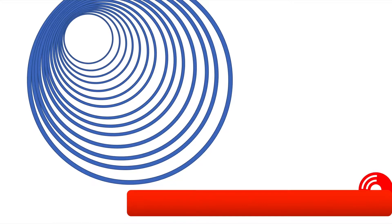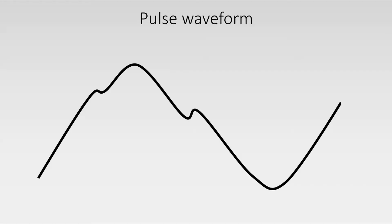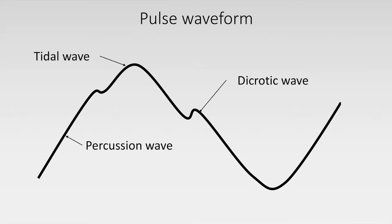This peripherally traversing wave is felt as the arterial pulse with these three fingers. This is the normal pulse waveform and can look complicated at first sight, however it is quite simple once we think about it. This is the percussion wave, this is the tidal wave, this is called the dicrotic wave and that forms the dicrotic notch. This is important because we will compare the normal pulse waveform against abnormal types later in this presentation.